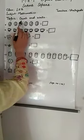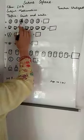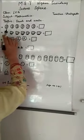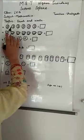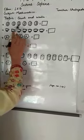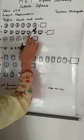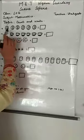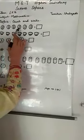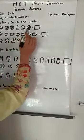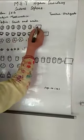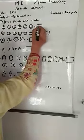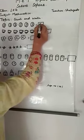Count means ginna, write means leekna. देखो बच्चो, मैंने यह example डाली है — यह balls हैं। इसको अच्छी तरह से देखना है, इसको count करना है: one, two, three, four, five, six. यहाँ box में लिखना है — six. कितने आये? Six balls.